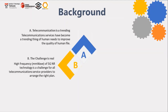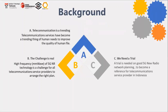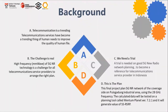Number two, as we know, 5G NR is a cellular technology that uses millimeter wave frequency as a firm additional spectrum and can achieve higher data rates. So a trial is needed on good 5G network planning in order to become a reference for telecommunication service providers in Indonesia. In this research, we will conduct 5G network planning on the coverage site with 28 GHz frequency in the Pulogadung industrial area. The calculated data will be tested on a planning tool called Mentum Planet, which will generate values of SS-RSRP.